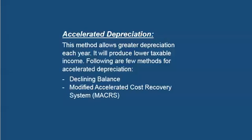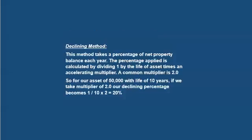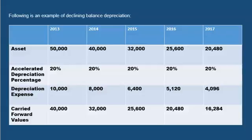Accelerated depreciation allows a greater depreciation each year, producing lower taxable income. There are a few methods for accelerated depreciation: declining balance and the Modified Accelerated Cost Recovery System, called MACRS for short. The declining balance method takes a percentage of the net property balance each year. The percentage is calculated by dividing one by the life of the asset, times an accelerating multiplier. A commonly used multiplier is 2. For our asset of $50,000 with a life of 10 years and a multiplier of 2, the declining percentage becomes 1 divided by 10 times 2, which equals 20 percent.